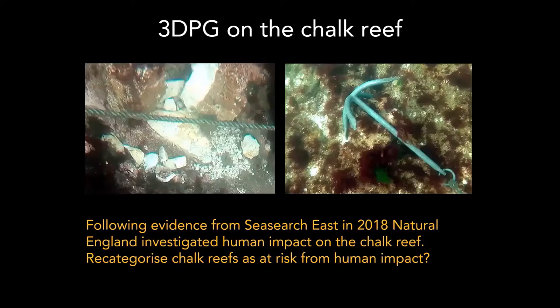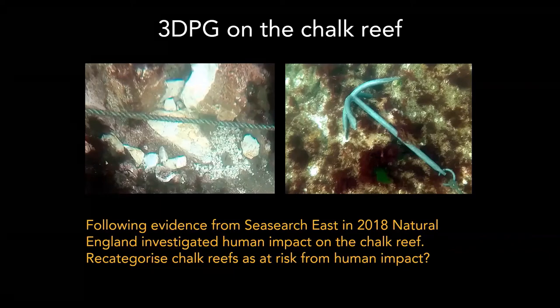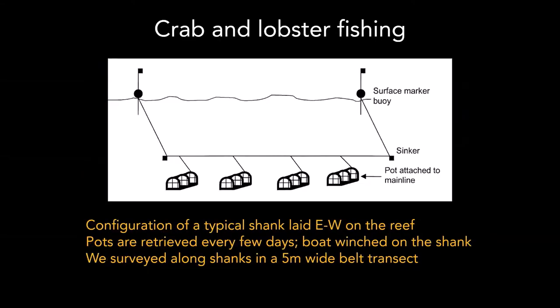A couple of years ago we got involved with Natural England, who wanted to do an investigation of human impact on the chalk reef based on evidence provided by Sea Search East. They wanted to categorize the risks to the chalk reef from human impact. The MCZ process for the Cromer Shoal MCZ had indicated that fishing activity was a low to negligible risk of damaging the chalk reef, but the evidence from Sea Search East showed that was not the case, so Natural England wanted to provide further evidence.